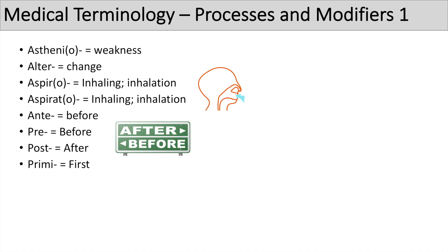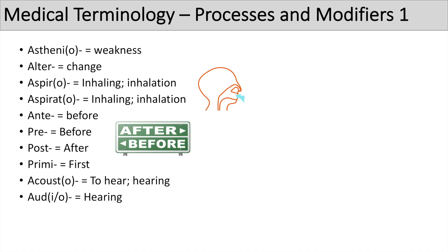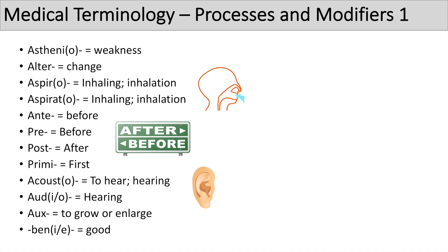The next prefix is 'primi', which means first — think of primitive or primal, all relating to something being first. Related to hearing are 'acoust' or 'acousto', which mean to hear or hearing, as well as 'aud' or 'audio', which also means hearing — think of audiology or acoustic guitar. Another prefix is 'aux', which means to grow or enlarge. And 'ben', 'beni', or 'bene' means good — think of benign or benefit.